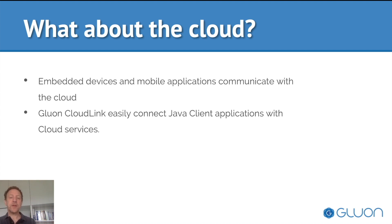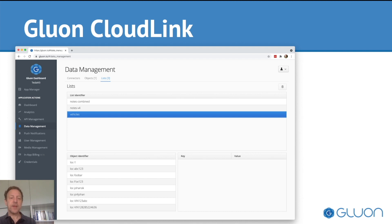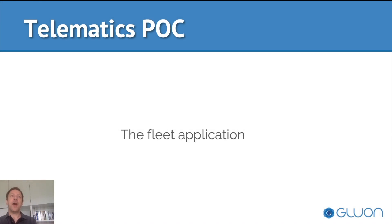And there we have Gluon CloudLink, which allows you to easily connect your Java client applications with cloud services. You can operate Gluon CloudLink using a web interface, where you can configure what data you want to share between the client and the servers, and what functionality you want to make available on the cloud and expose to the client — and then invoke a remote function for calling that functionality in a serverless container. To demonstrate that, we created a simple fleet application which connects to Gluon CloudLink. The demos you saw before with the embedded scenario and the mobile scenario also send their position information to Gluon CloudLink, and the fleet application retrieves this information from Gluon CloudLink.